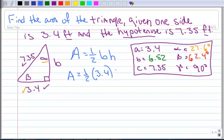I could say that that's my 3.4. The height, that's my B. So that's what? 6.52.